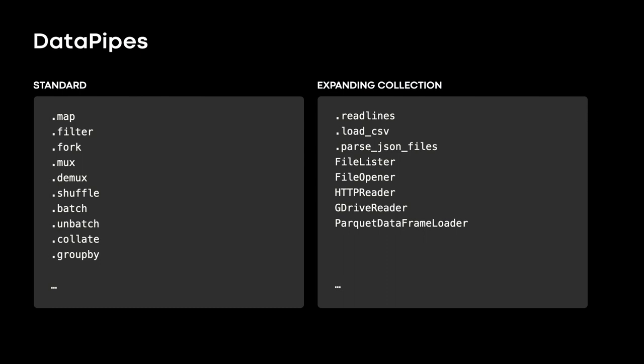Data manipulation primitives like filter and map do not require special introduction. There are flow control functions like mux, fork, and demux, which allow having multiple paths in the graph. And for machine learning concepts, we provide pipes like batch, unbatch, and collate. TorchData repository has many other data pipes for data and data order manipulation like shuffle, round-robin, zip, zip-by-sequence, etc.